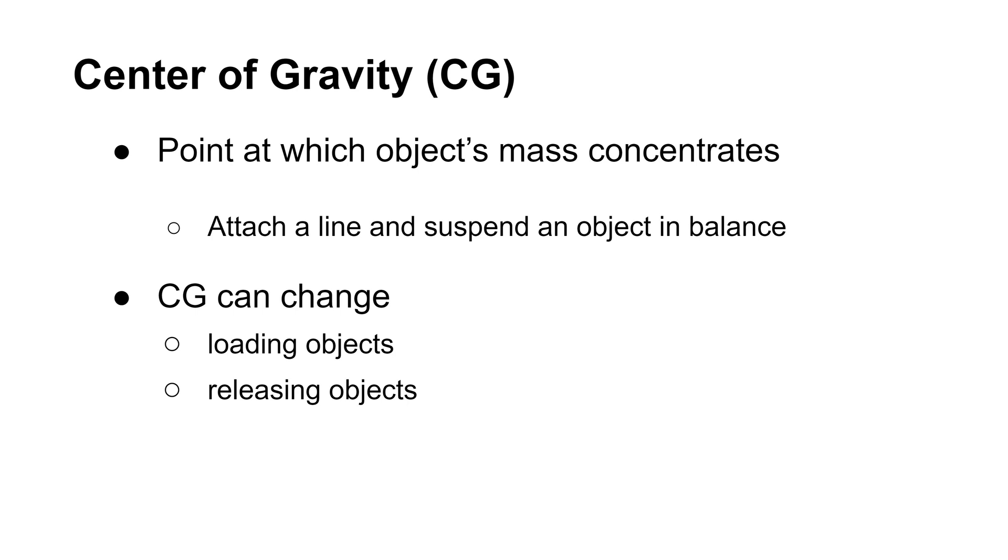The center of gravity of an aircraft may change. The typical reason for this is loading or releasing items from the aircraft. For instance, if you attach an extra battery to the drone, this will shift the location of the center of gravity.